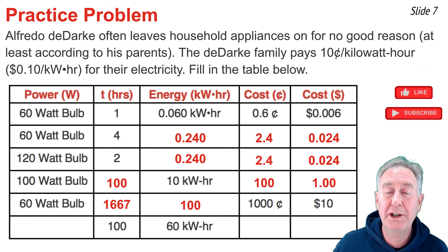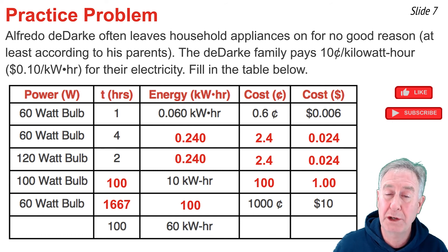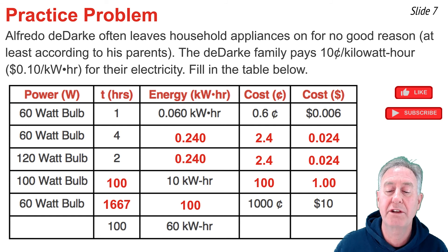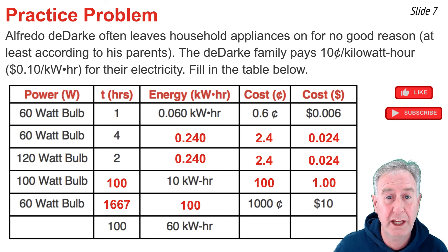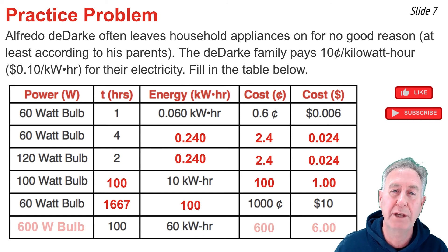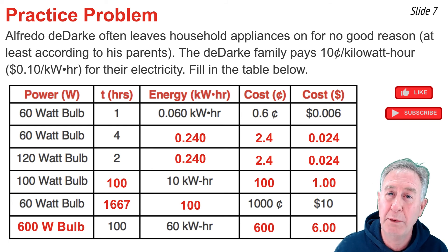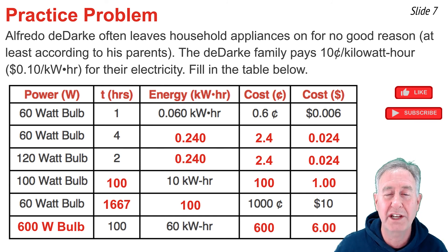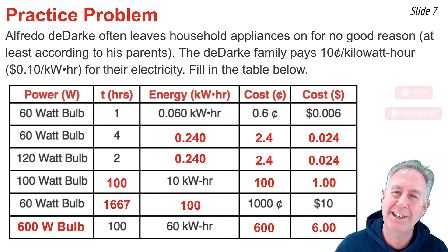In the last row, given 60 kilowatt-hours of energy over 100 hours, power equals energy divided by time: 60 divided by 100 equals 0.6 kilowatts, or 600 watts. To find the cost, multiply 60 kilowatt-hours by 10 cents to get 600 cents, then divide by 100 to get 6 dollars.